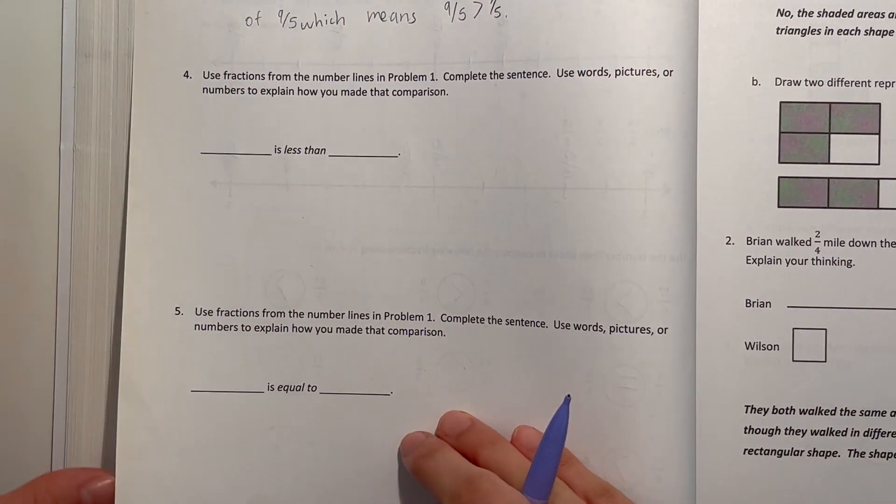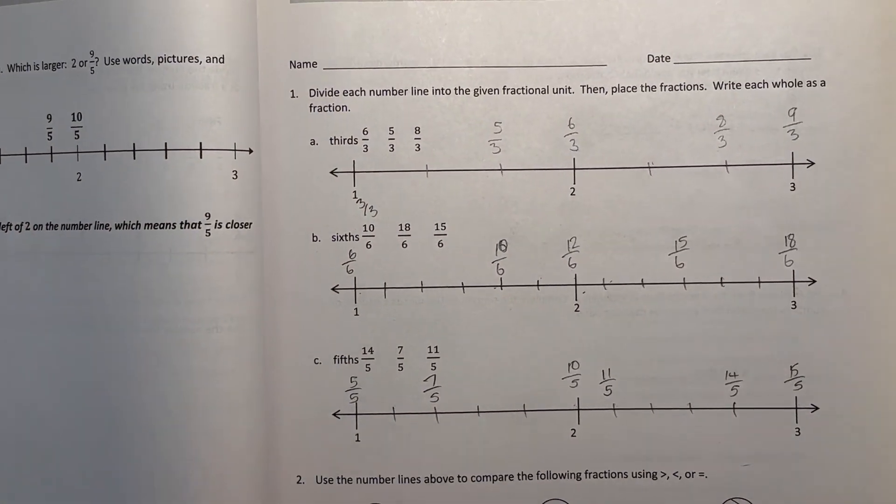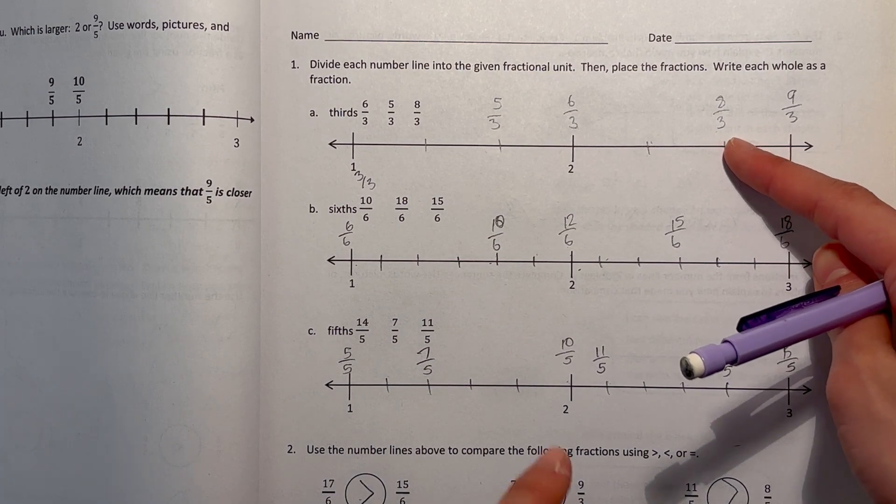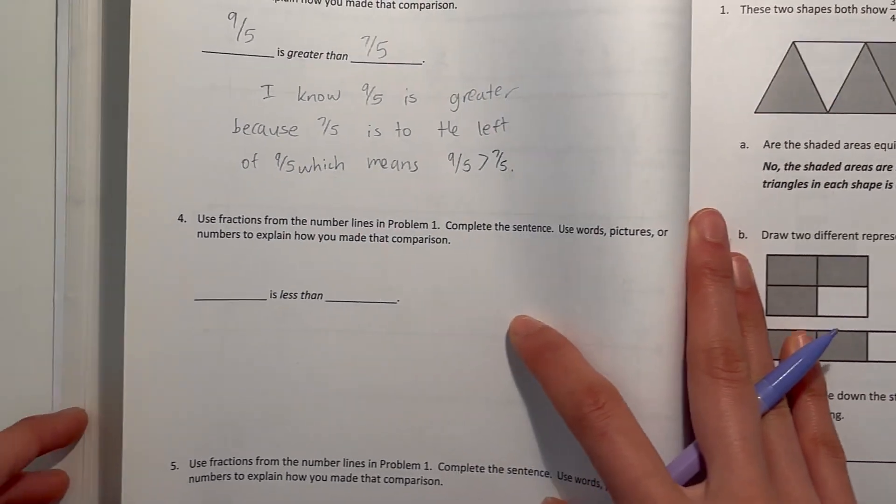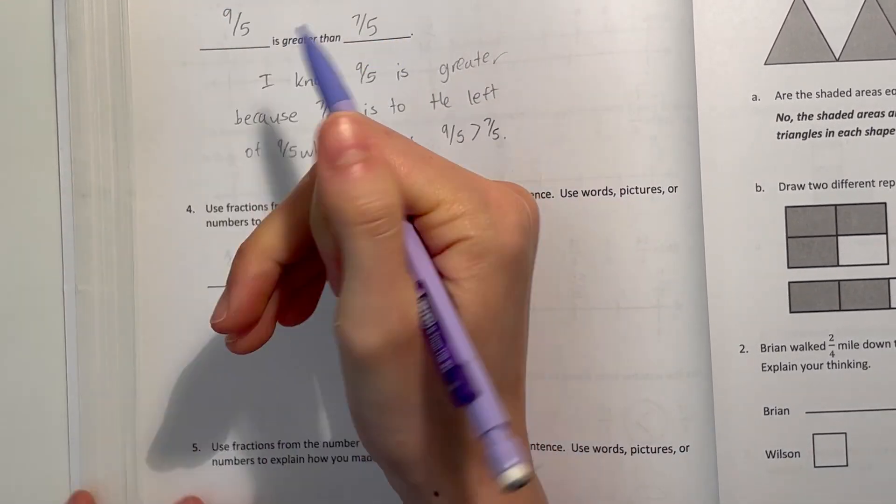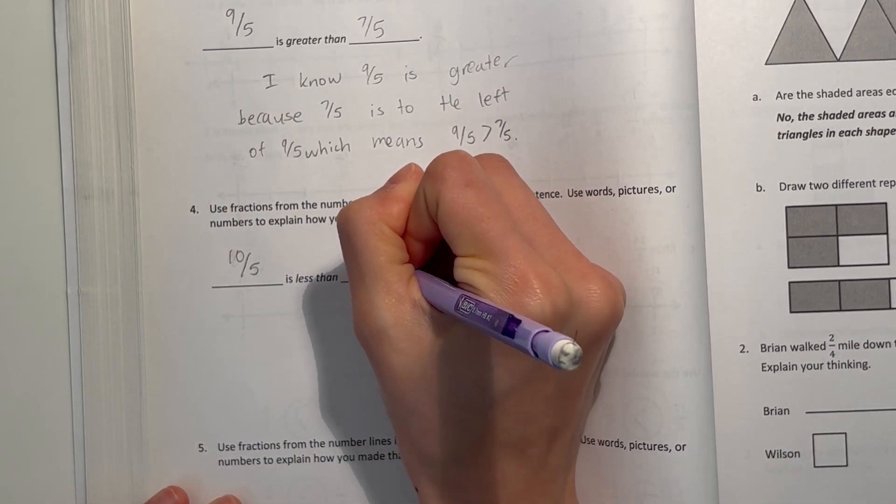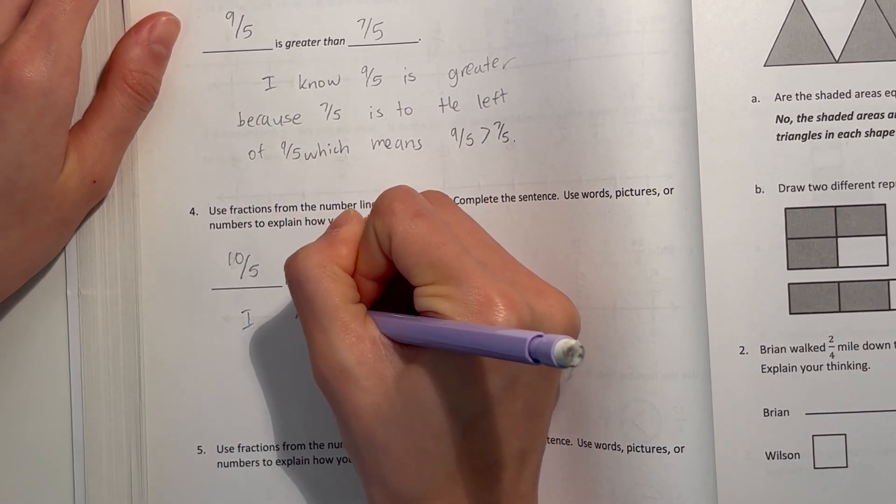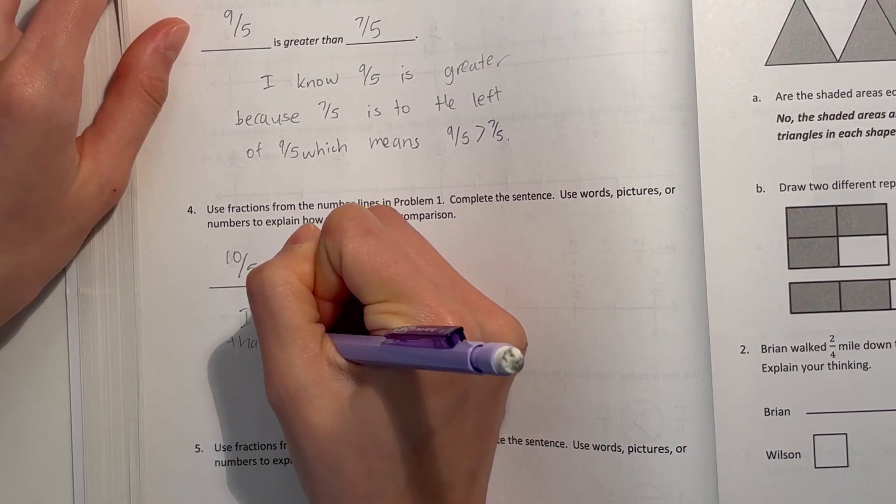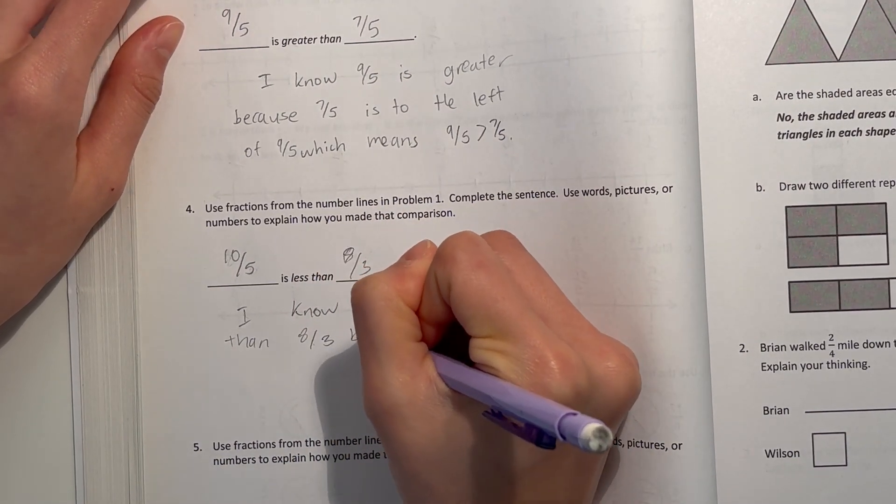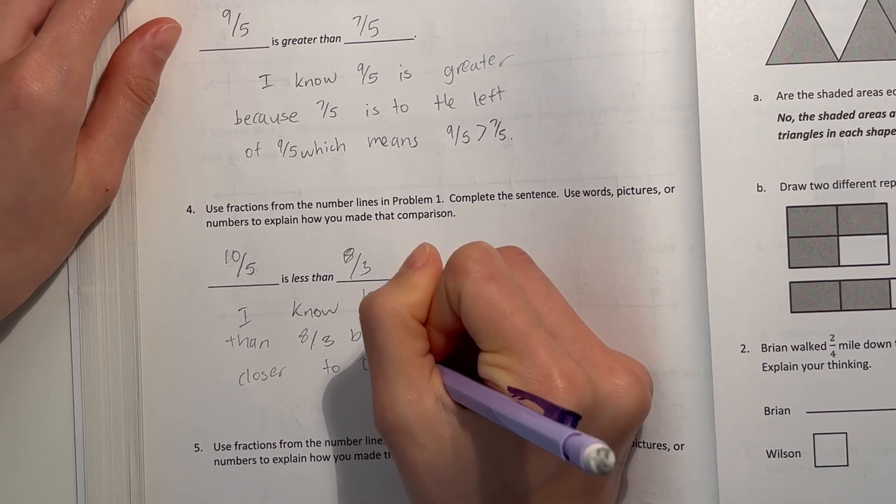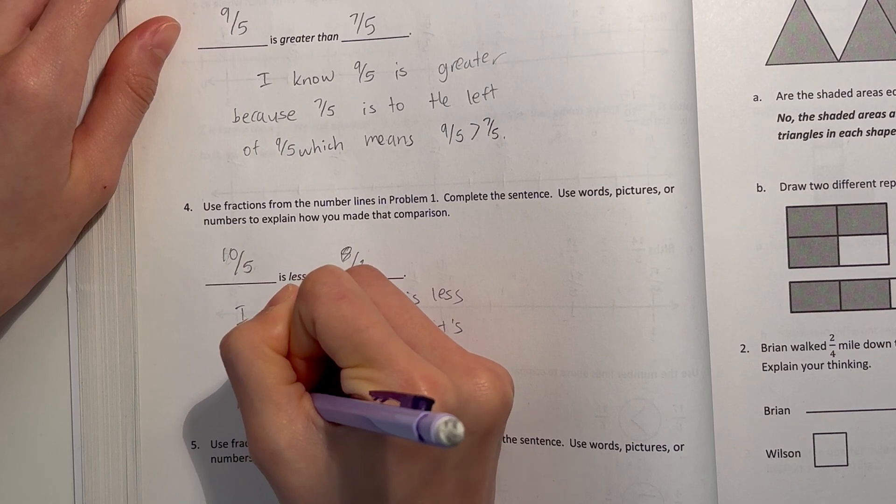Now number 4, do the same thing. Let's see if we can do one from different number lines. So let's see what's one good one we can do. We can do 8 thirds and 10 fifths. So 8 thirds is greater than, oh no, oops. 10 fifths is less than 8 thirds. So I know 10 fifths is less than 8 thirds because it's closer to 0 on the number line.